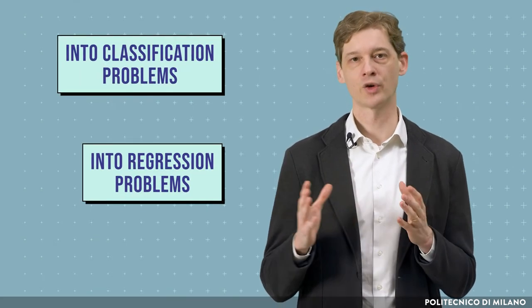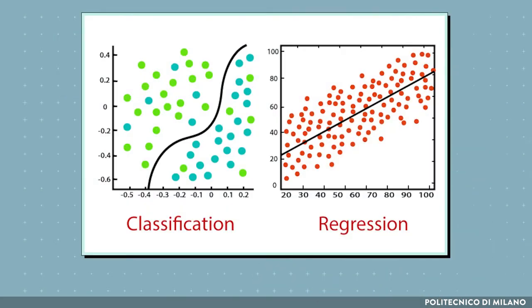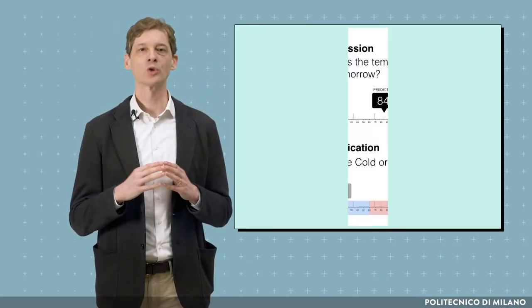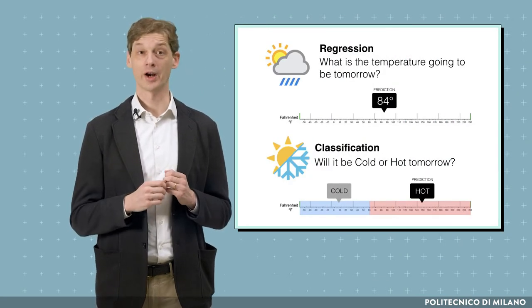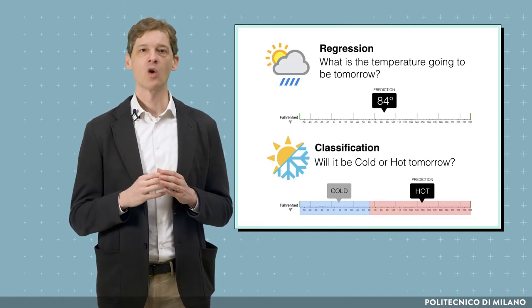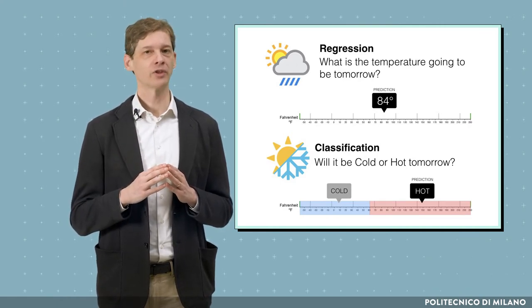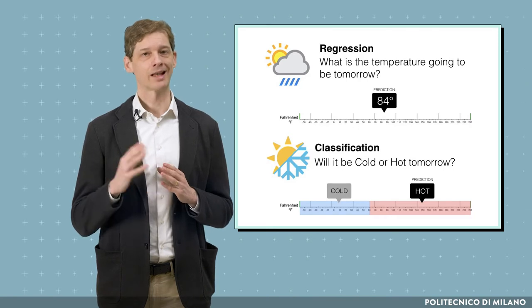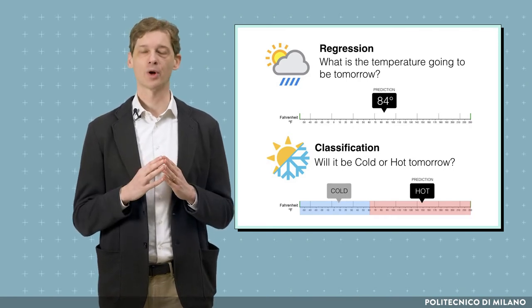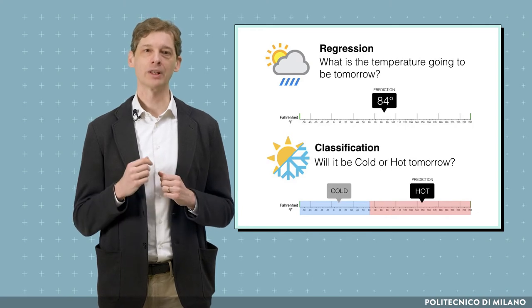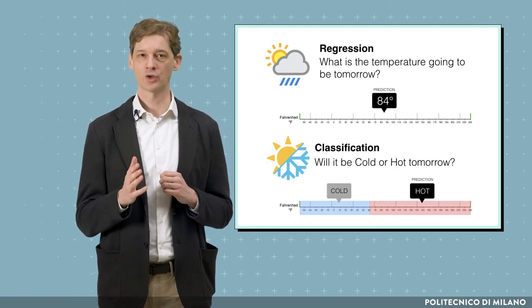Supervised learning techniques can be applied both to classification and regression problems. In classification problems, the output variable to be predicted is categorical or discrete, while in regression problems the output variable is numerical or continuous. For example, consider a weather forecasting problem where, given a set of meteorological input variables, we have to predict the weather tomorrow. If the expected output is a label like sunny, cloudy, or rainy, we have a classification problem, while if we have to predict the temperature during the day, it is a regression problem.